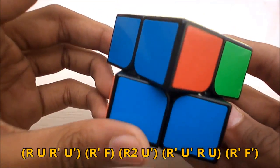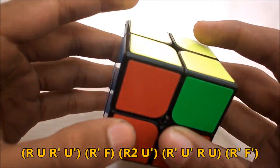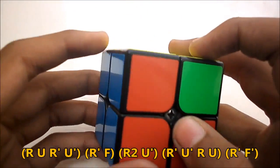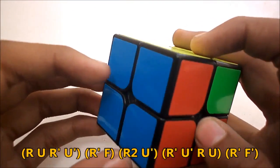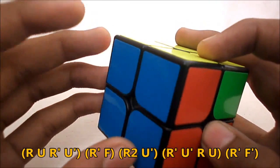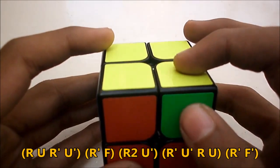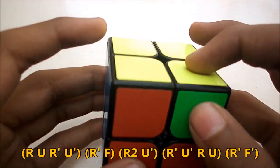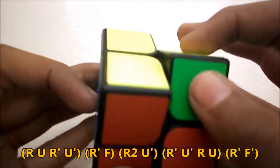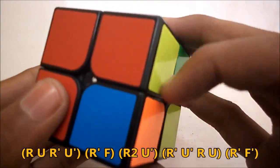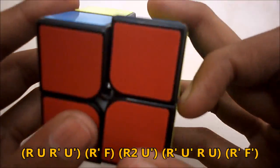So the first PBL case is when you have the bottom layer solved and there's an adjacent swap on the top. So you hold the cube like this with the solved corners like this on the left and you perform the algorithm which is also called the T perm. So it goes like this: R U R' U' R' F R2 U' R' U R U R' F'.